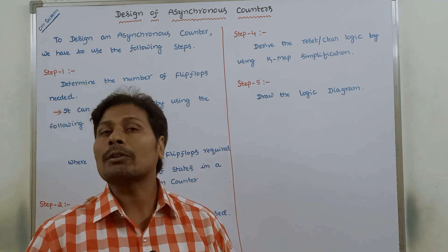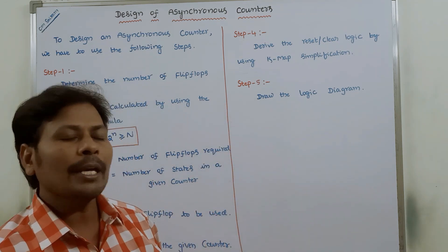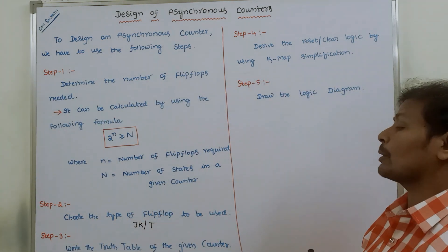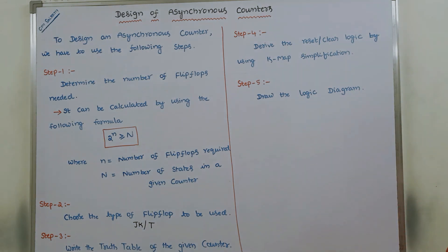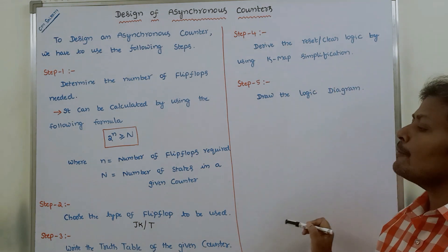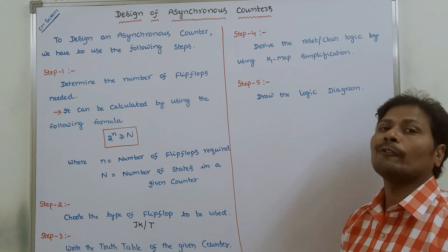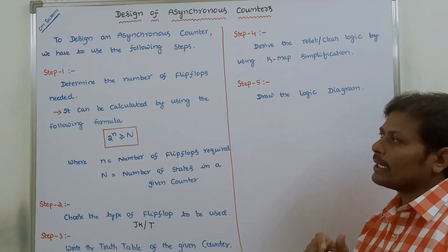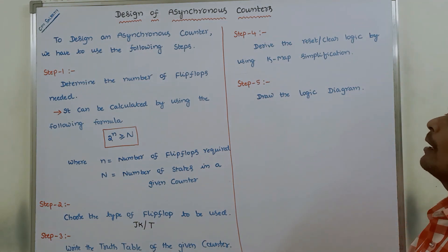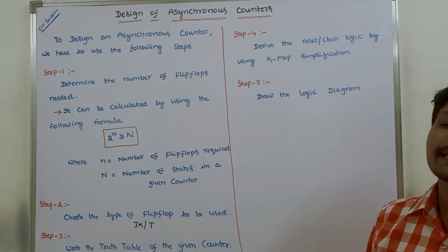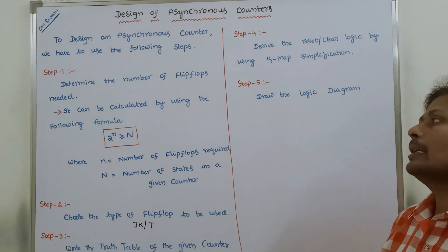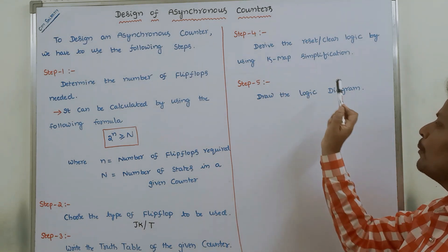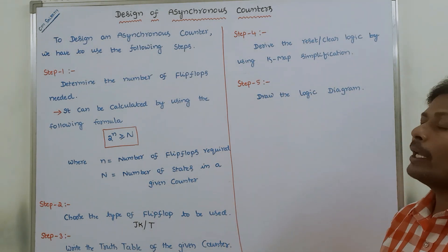Step 5: draw the logic diagram. Finally, we have to draw the logic diagram for the given asynchronous counter. These are the five steps we have to follow to design any asynchronous counter. In the next video, we can go for the design of a BCD ripple counter using these five steps.